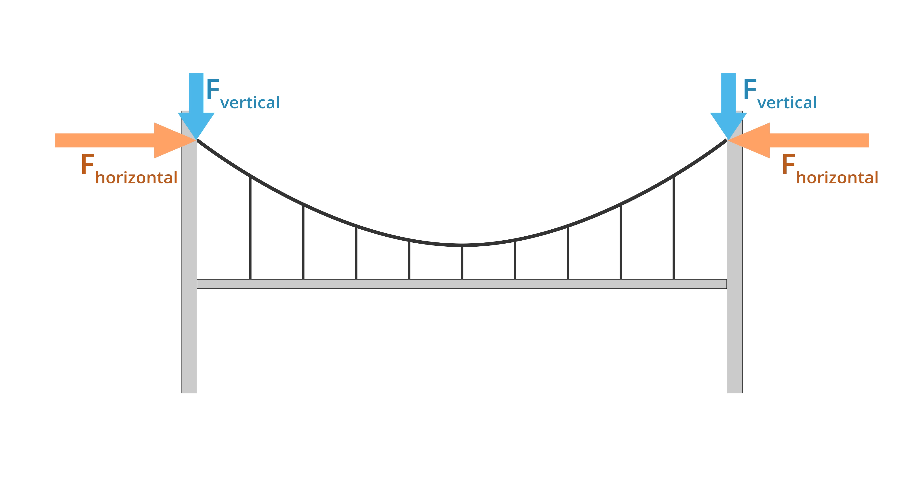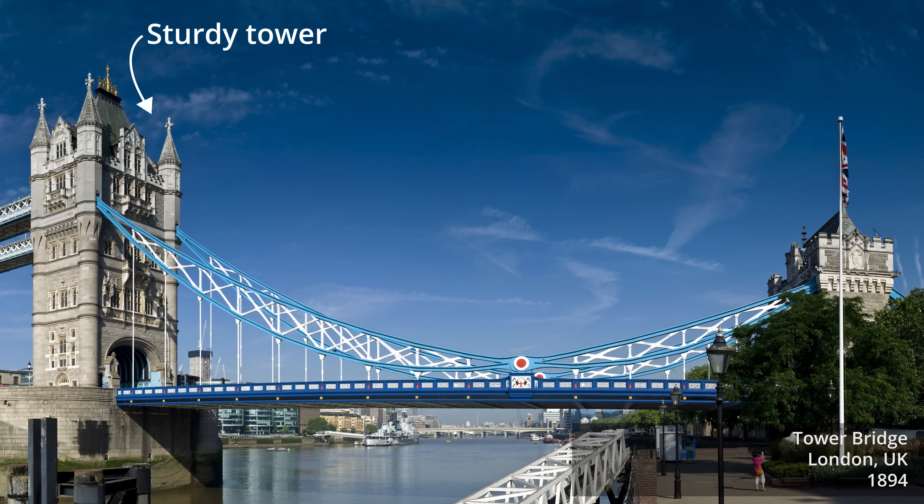The large horizontal forces produced by bridge cables have important design implications. If they were to act on tall, thin bridge towers, they would produce a lot of bending in those towers, and that would not be good. Those forces could, however, be resisted by sturdy, wide towers, and that's exactly the strategy used in the London Tower Bridge.